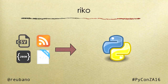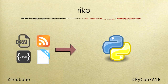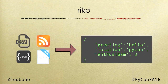With Rico, you're able to fetch feeds from across the web. You can take CSV, RSS, JSON, and HTML, and the output is a Python structure — in this case, an iterable of dictionaries.